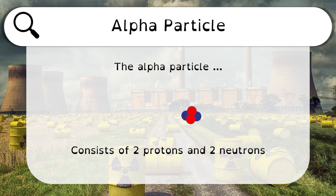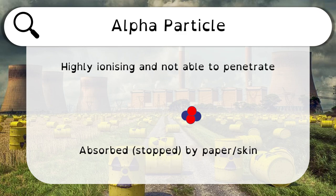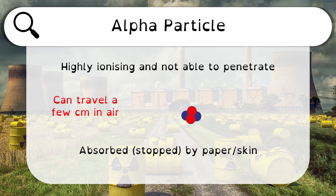As a reminder, an alpha particle is two protons and two neutrons. This is relevant because we need to know its charge. Because it has two protons, each with a charge of plus one, and neutrons are neutral with zero charge, an alpha particle has an overall charge of plus two. So an alpha particle is highly ionising and not able to penetrate through things — it's highly charged and very large, with a mass number of four. In fact, it's absorbed and stopped by paper or skin, and can only travel a few centimetres in air.